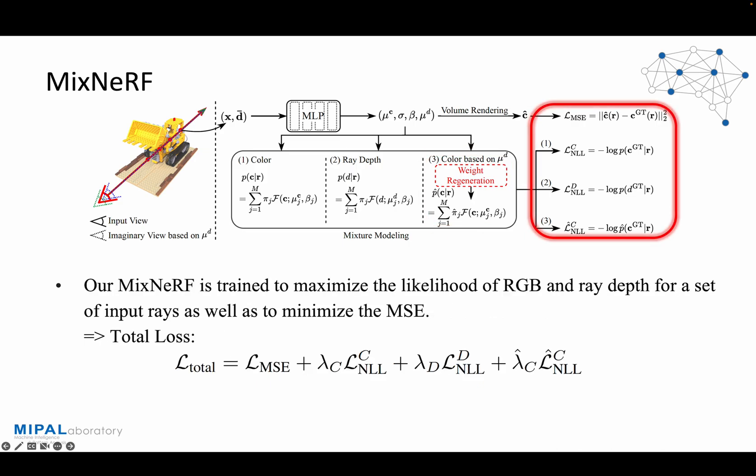During the training process of MixNeRF, our objective is to maximize the likelihood of colors and ray depths for a given set of input rays while simultaneously minimizing the mean squared error (MSE). As a result, we can straightforwardly define the loss functions to minimize both the negative log likelihood of the ground-truth values and the MSE loss. Lambda terms are used as balancing weights for the losses.